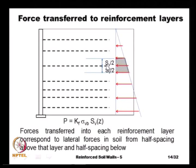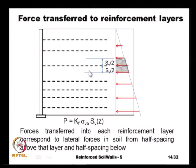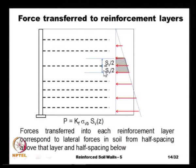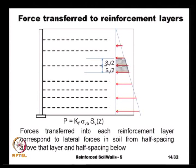The particular reinforcement layer at a depth z will carry a load equal to 2 times F_h (the lateral force at the surface) divided by H (height of the active wedge), times (1 − z/H), times S_v(z) — the vertical spacing between different layers. The effect of this lateral load decreases in a triangular manner from maximum at the top to zero at depth H. For simplicity, we assume that lateral pressures are transferred into each reinforcement layer only from a height of half the spacing above and another half the spacing below.